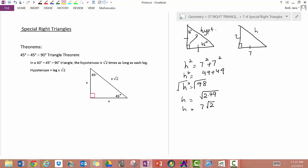So h equals 7 root 2. So look at this relationship. You've got 7, 7, and the hypotenuse is 7 root 2. So if you're getting a 45-45-90 triangle, the legs will be congruent. The hypotenuse will be root 2 times the leg. If you're given the leg, multiply by root 2.